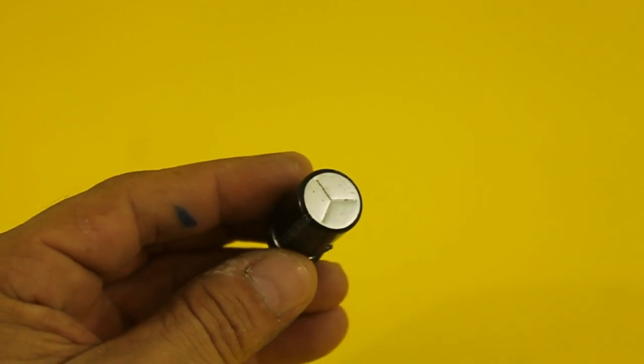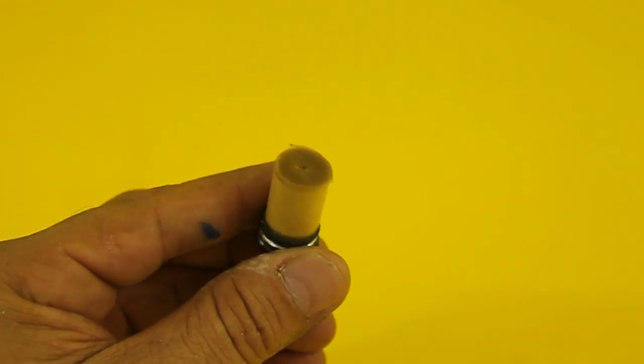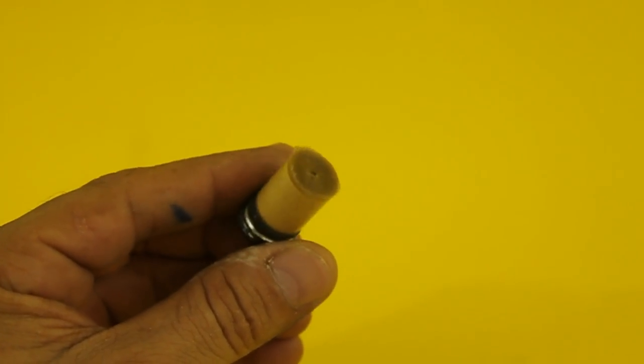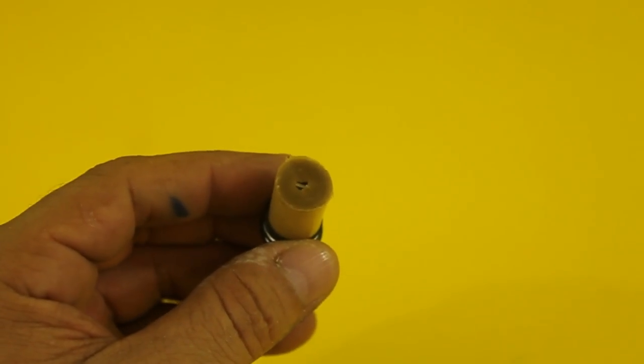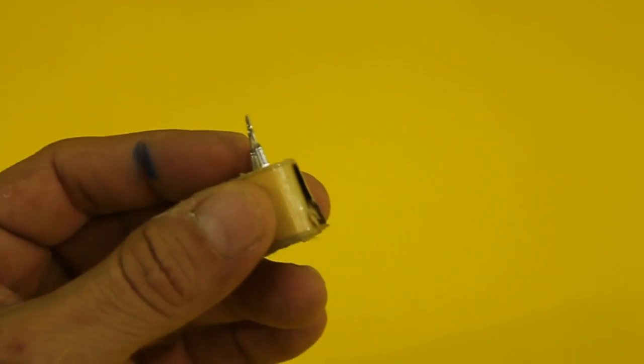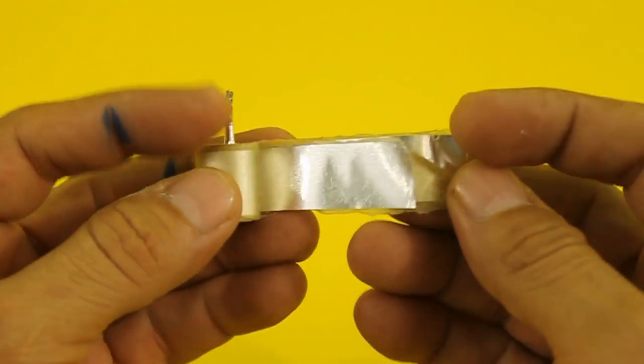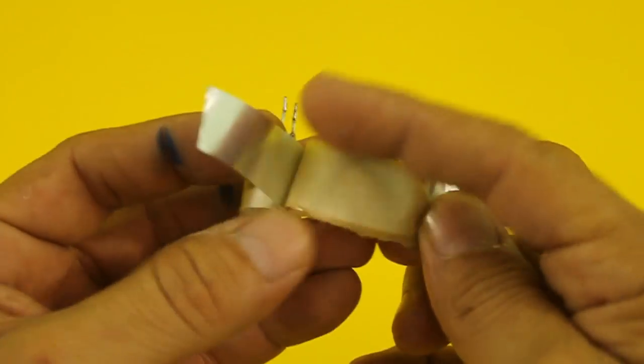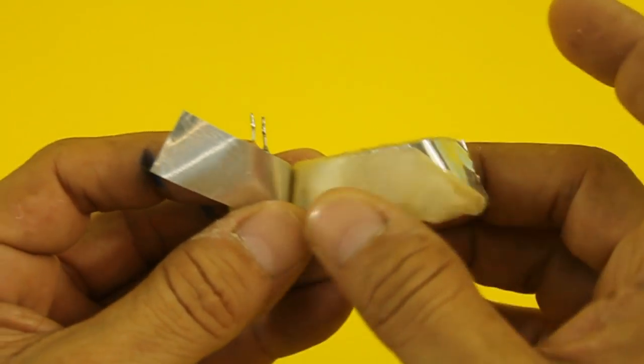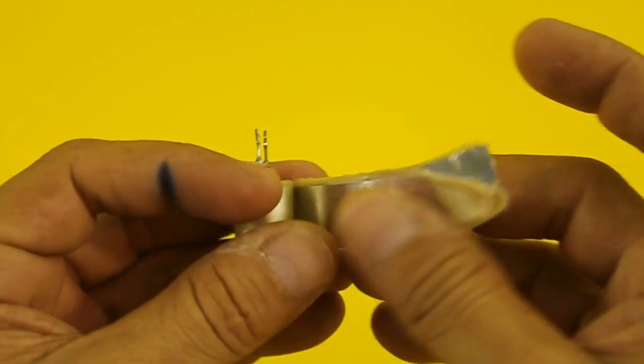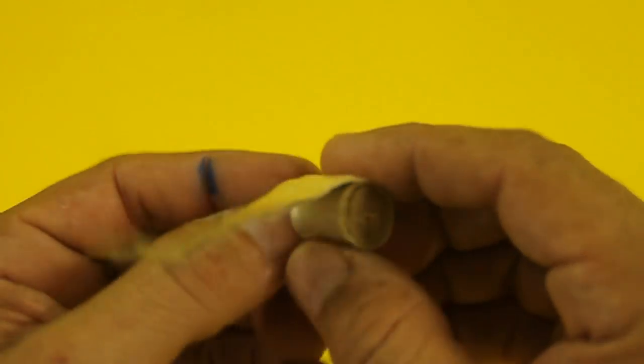Most capacitors are made with their plates wound in the form of a coil and this generates a capacitance but also an inductance. Here we can see the two plates of the capacitor separated by the dielectric and as you can see they are wound in the form of a coil.